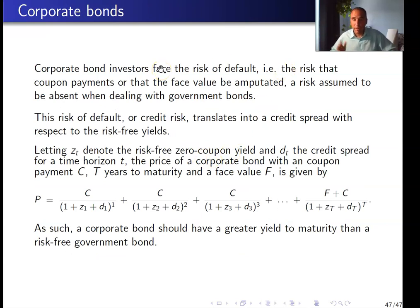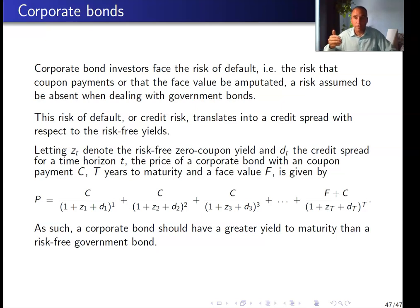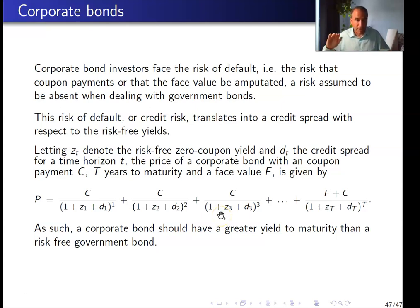Finally, corporate bonds work in a similar way to risk-free bonds, but they carry a risk of default, meaning you may not receive all coupon payments or the full face value at maturity. Because of this default risk, corporate bonds are riskier than risk-free bonds, so the discount rate used for their future cash flows must include a premium over the risk-free rate. It is then possible to build a yield curve with risky rates, and this concludes the lecture.